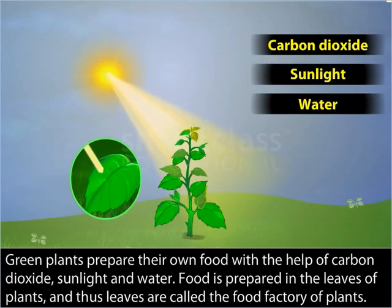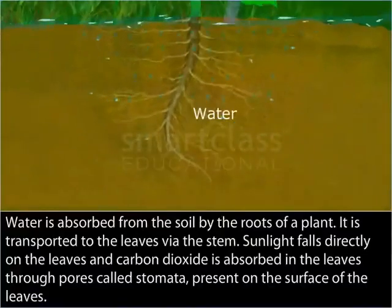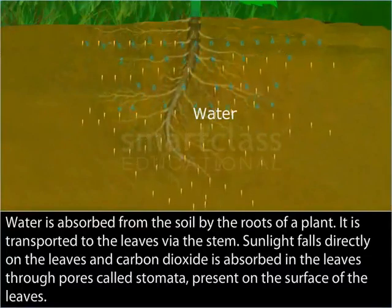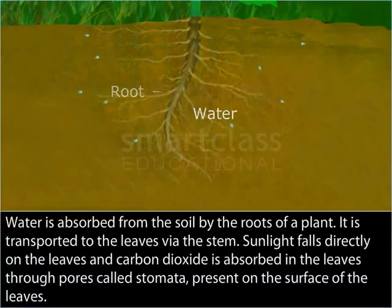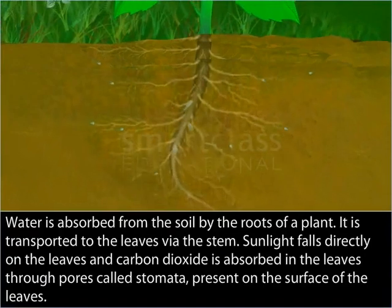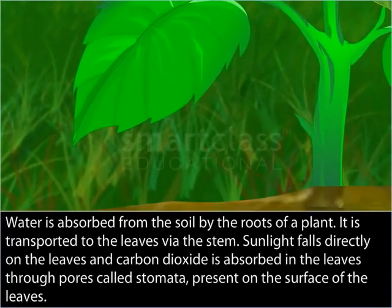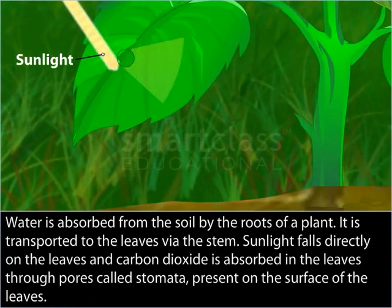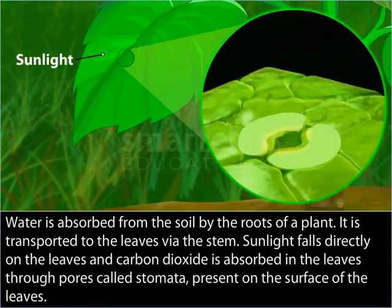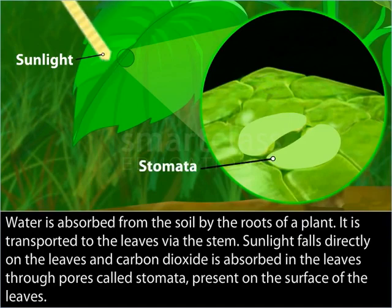Let us find out how food is prepared in the leaves. Water is absorbed from the soil by the roots of a plant and transported to the leaves via the stem. Sunlight falls directly on the leaves and carbon dioxide is absorbed in the leaves through pores called stomata, present on the surface of the leaves.